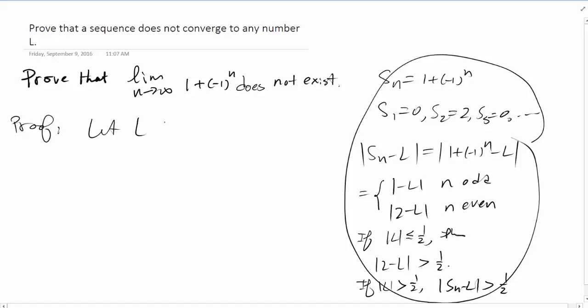Let L be any number in R. We consider |Sn - L|, which equals -L if n is odd and 2 - L if n is even.